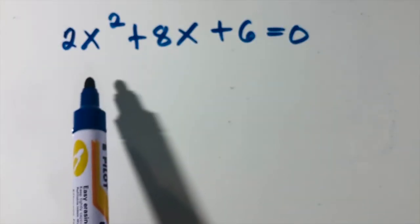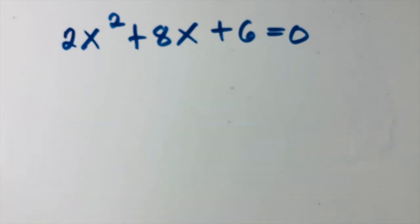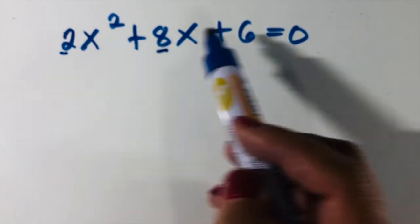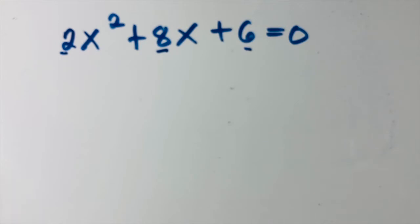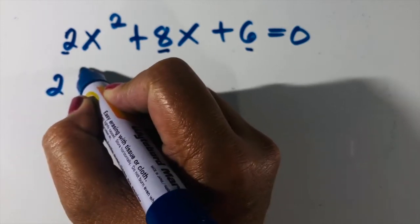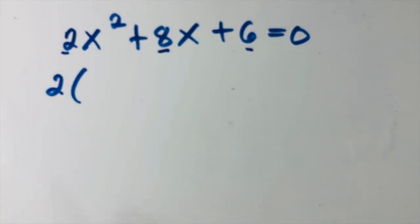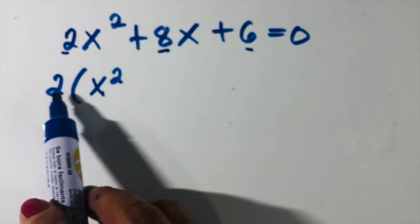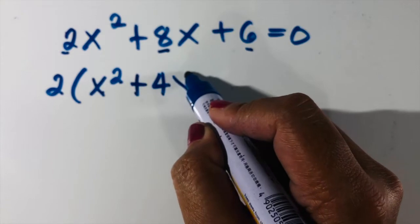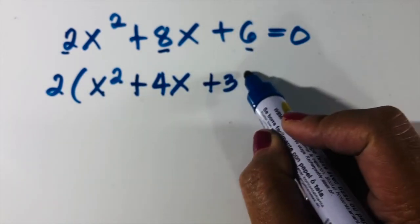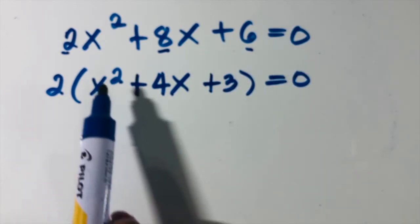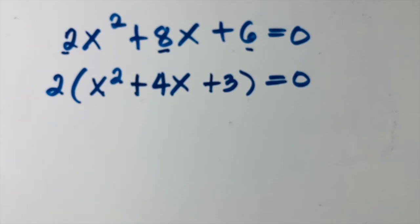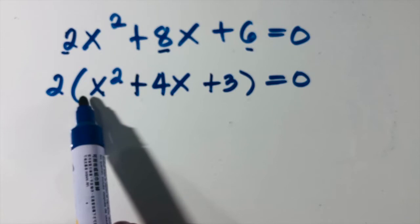Let us try 2x squared plus 8x plus 6 equals zero. Is this written in standard form? Yes. Is there a common factor among all terms? We have 2, 8, and 6 — the greatest common factor is 2. Factor out 2: 2x squared divided by 2 is x squared, 8x divided by 2 is 4x, and 6 divided by 2 is 3.